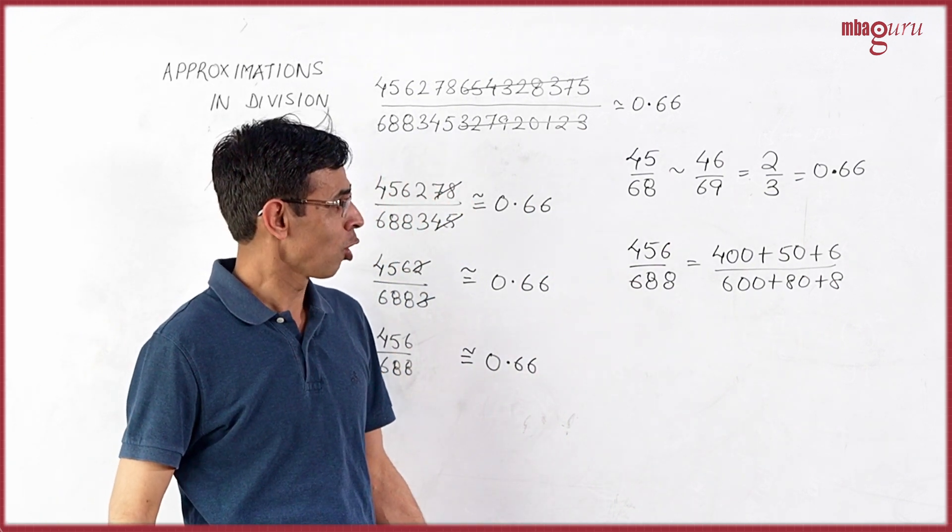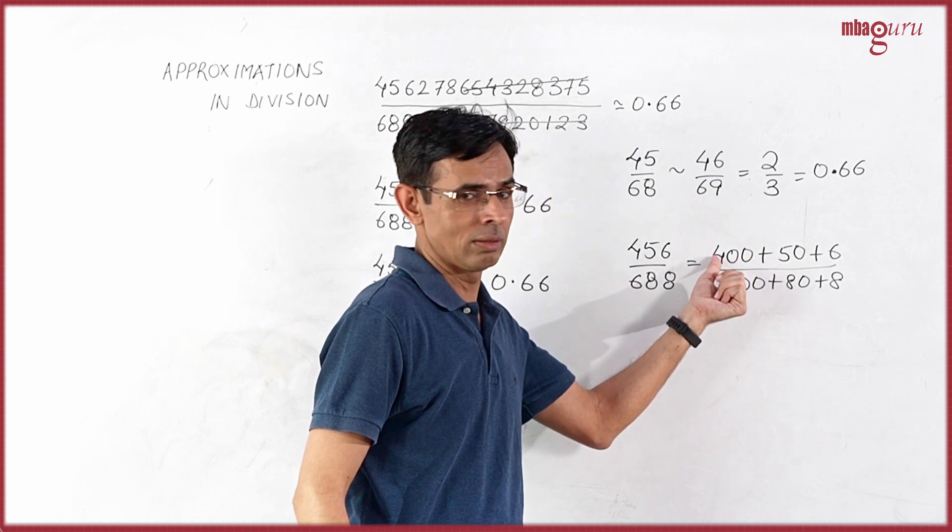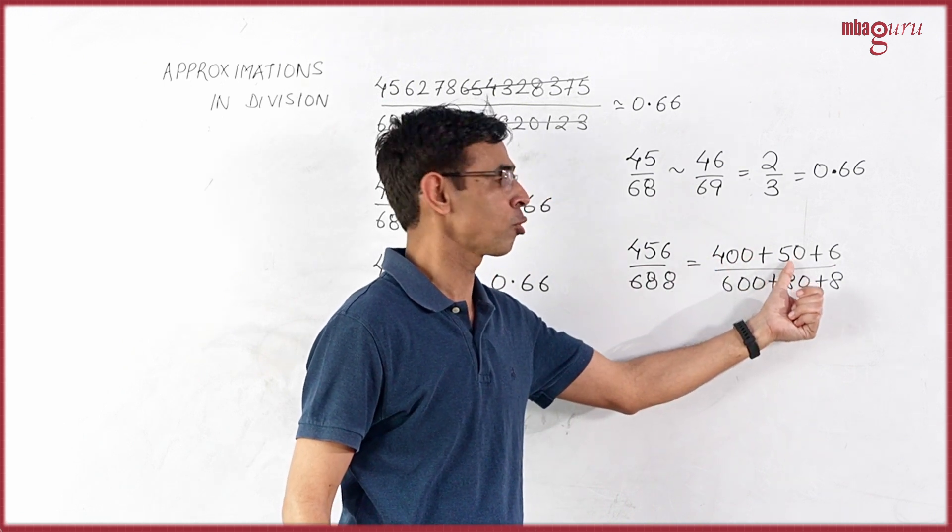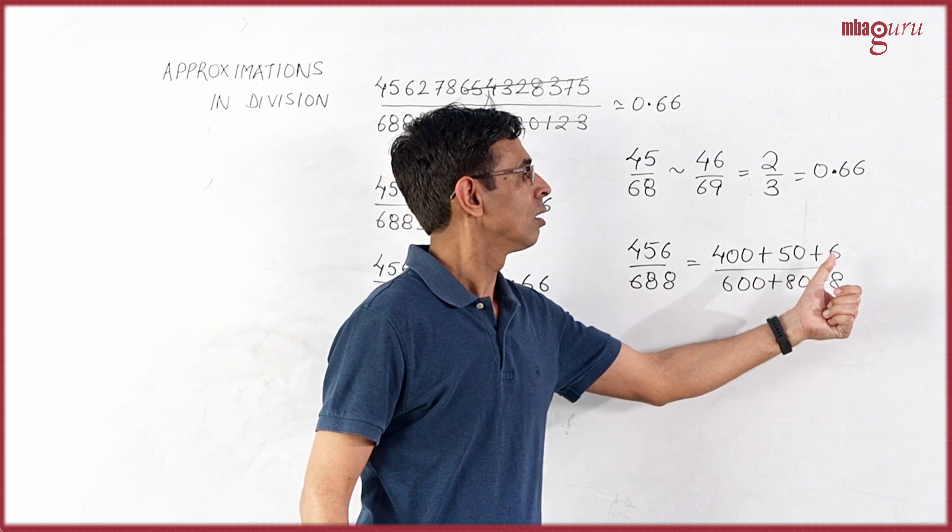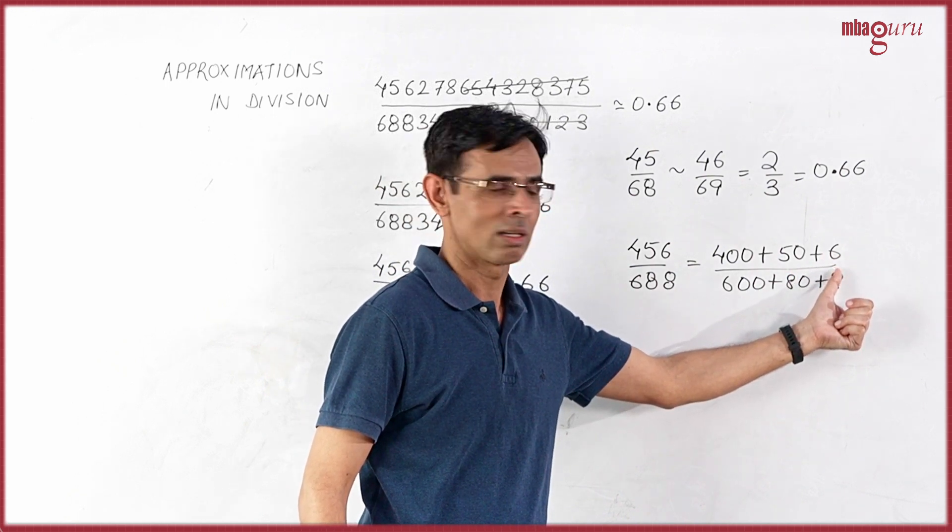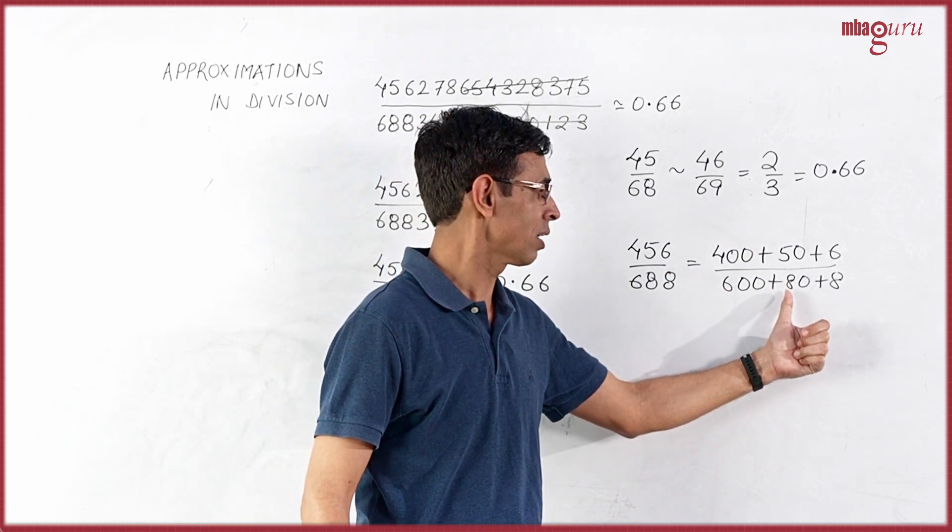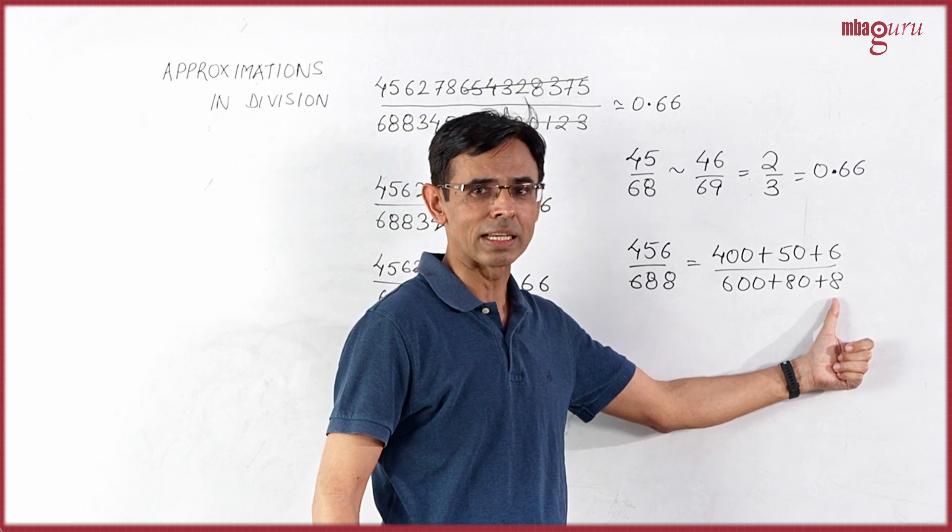So, the contribution that 4 is making is 10 times more than the contribution that 5 is making, which is 10 times more than the contribution that 6 here is making. Similarly, this 6 is 10 times more powerful than this 8 and this 8 is 10 times more powerful than this 8.